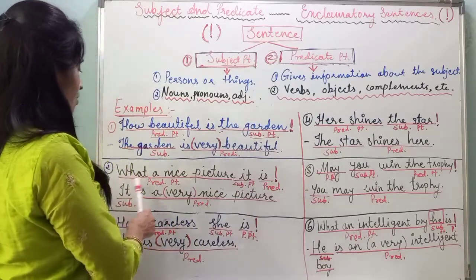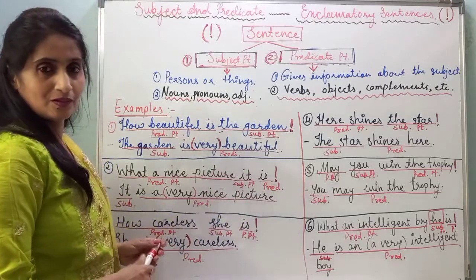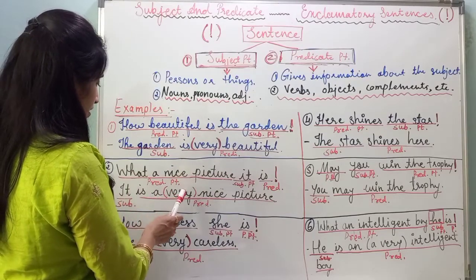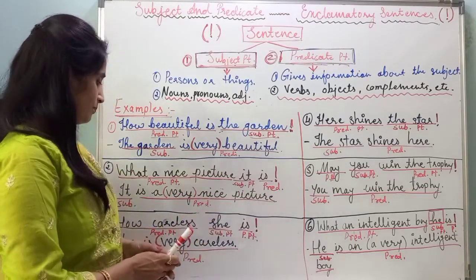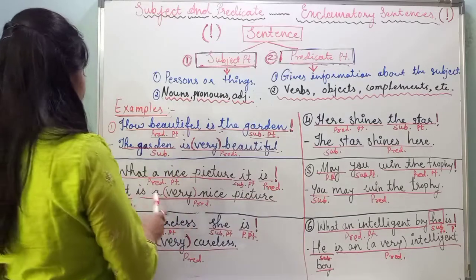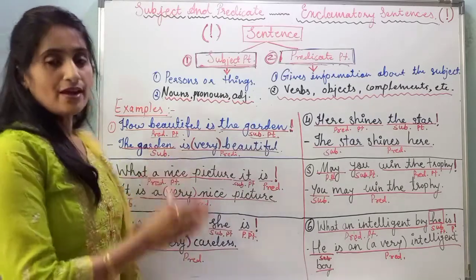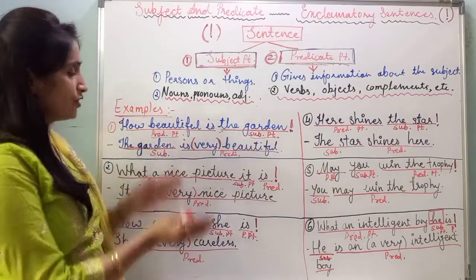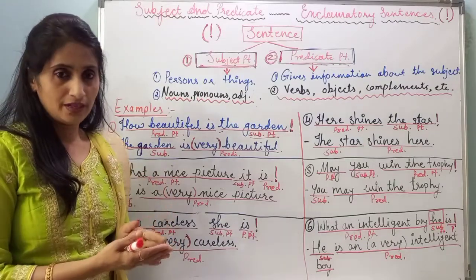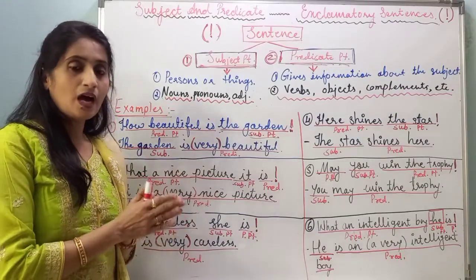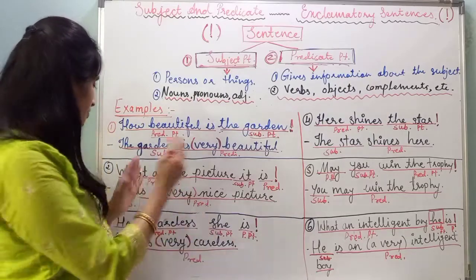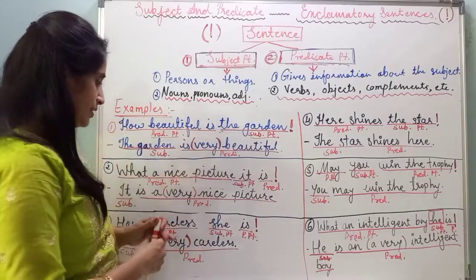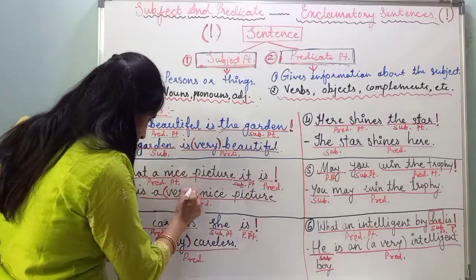Now see the second sentence: 'What a nice picture it is!' The conversion of the sentence is 'It is a very nice picture,' or 'It is a nice picture.' If an exclamatory sentence begins with 'what,' we generally make use of 'a very.' If it begins with 'how,' we use 'very'; if it begins with 'what,' we use 'a very.'